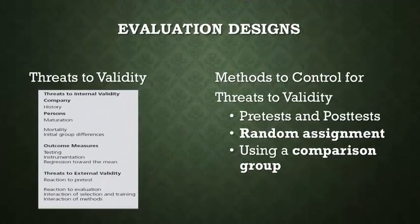How much confidence can we place in the results we are getting from these training programs? There is no evaluation design that can ensure the results of an evaluation are completely due to the training — there could be other factors at play. We can try to limit them. Things we need to be aware of are the threats to validity, both internal and external. With internal validity, we want to make sure that the results are believable. With external validity, we're asking: to what extent are the evaluation results generalizable to other groups of trainees in other situations? If we can't show that, what's the point of our evaluations?